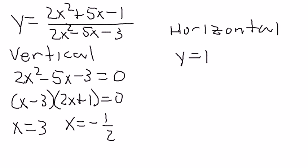There are a couple rules with horizontal asymptotes that will be helpful for you to know. For horizontal asymptotes, there are three rules.